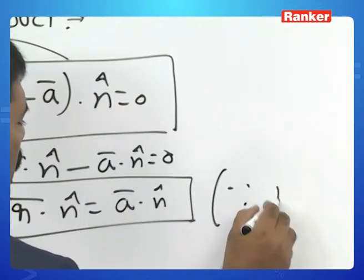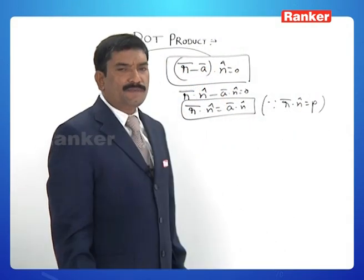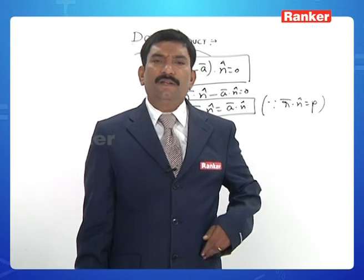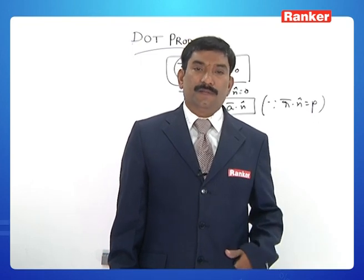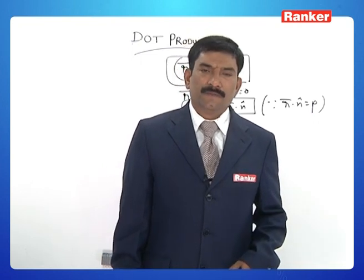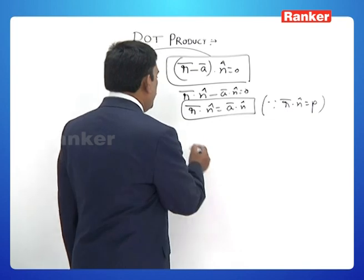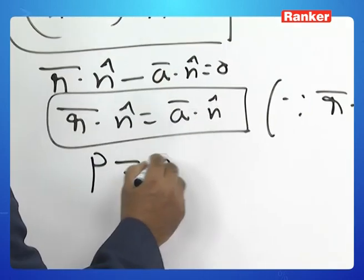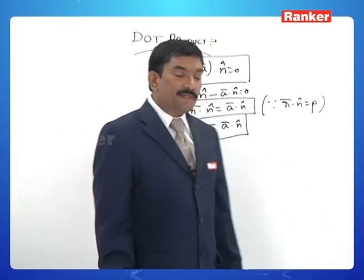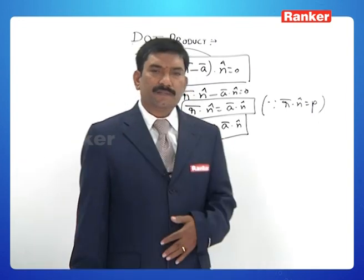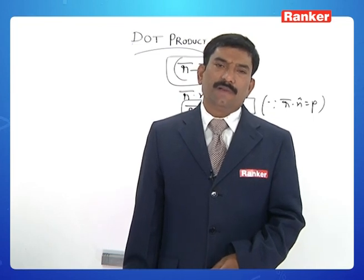Since the vector equation of a plane where p is the perpendicular distance from the origin to the plane and n̂ is the unit vector perpendicular to it, then r̄ dot n̂ equals p. Therefore p equals ā dot n̂. This represents the perpendicular distance from the origin to the plane which is passing through the point ā and perpendicular to the unit vector n̂.